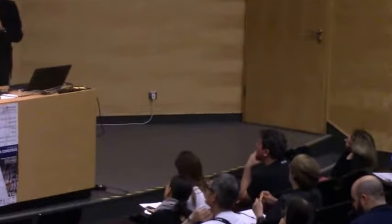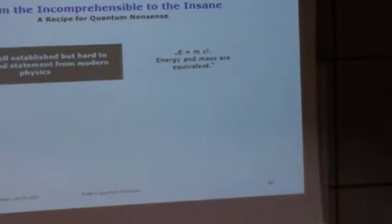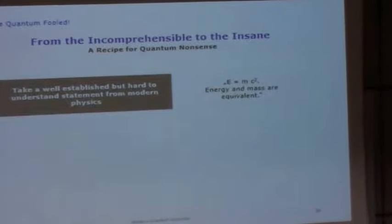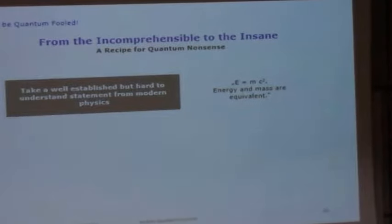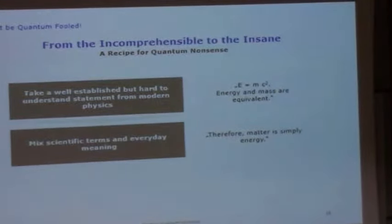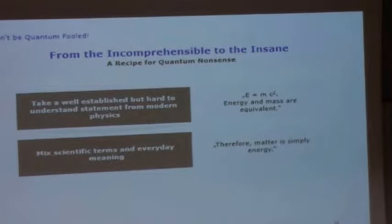And that gets us to some simple rules of how to avoid being quantum fooled and how to avoid being told quantum woo without really knowing what to say about this. The first thing to know about quantum nonsense and to be able to not be fooled by quantum nonsense is to understand how it works. And there is actually a pattern that is recurring almost every time you encounter quantum nonsense for how it is created. First of all, if you want to make your own quantum nonsense, you start out with a well-established and hard to understand statement from modern physics. Like, something that everybody has heard, E equals MC squared, everybody has heard it, not everybody understands it, very few people know where it actually comes from. But, yeah, it is there and people generally accept it.